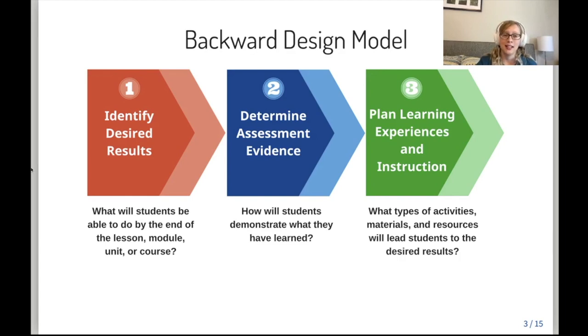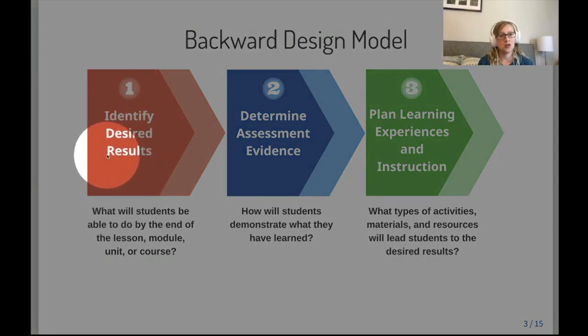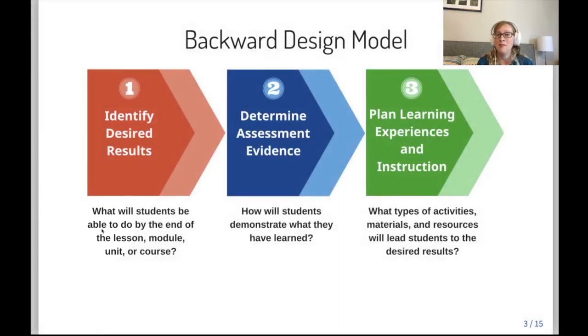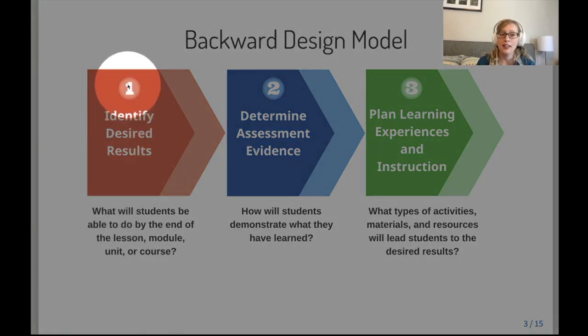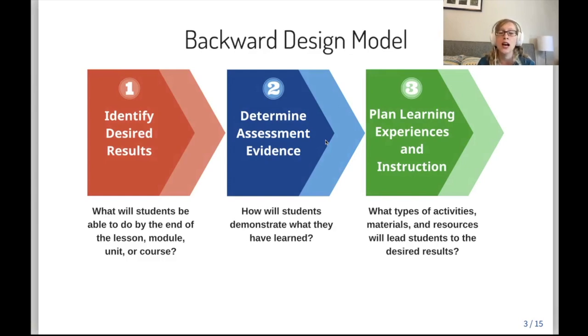When you're designing things backward, you go through a three-step process of first identifying what you want your students to be able to do. For example, in a math stats course, one learning objective would be that my students can simulate data using a Poisson distribution and then use that simulated data to answer a research question. After you have that list of results, you'll then think about how to assess it. And then once you've got all of that down, you'll plan your learning experiences and your instruction for the semester.